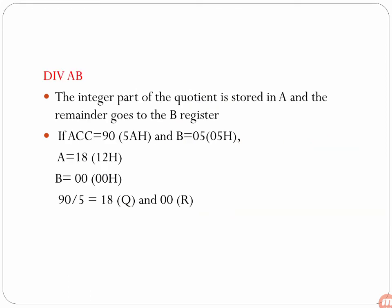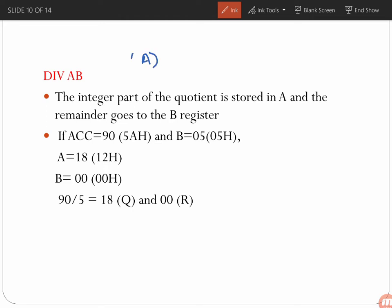Next is DIV AB. It divides the content of the A register by the B register. Whenever we do division, we have a quotient and a remainder. The quotient will be stored in the accumulator register and the remainder will be stored in the B register. A division operation divides the content of A by the content of B, producing a quotient stored in the accumulator and a remainder stored in the B register.